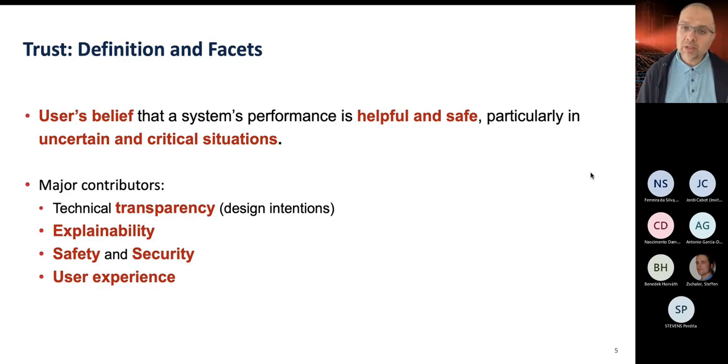People have been researching trust quite a bit, initially in terms of human-human and social interactions, but also later on in terms of human machine interaction, and they have come up with a list of contributors. The main one that I will be focusing today is technical transparency, which is having an understandable model of how the system behaves and revealing the intention of the designers, which is often missing in modern complex systems.